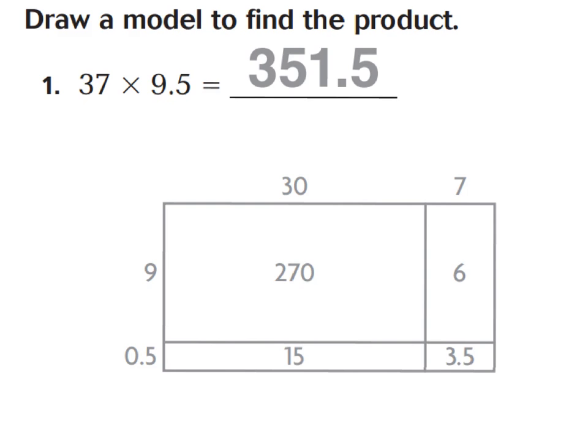Let's take a look at lesson 4.4 in our GoMath book to review how to draw a model to find the product. Number 1 shows the model for you. This is a lot like what we did with whole numbers back in 4th grade, so it should be fairly similar. However, it is a little different because we do have decimals that we're multiplying. Please be careful at the decimal point to make sure you answer correctly.